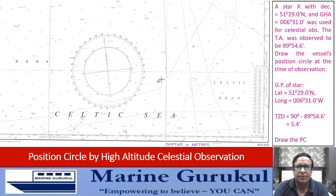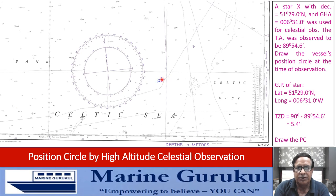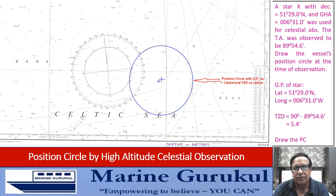You can see here: this is the GP of the body, this is the longitude of the GP, and this is the latitude of the GP. With GP as the center and 5.4 miles as the radius, we draw a circle, and this becomes the position circle in this particular case.